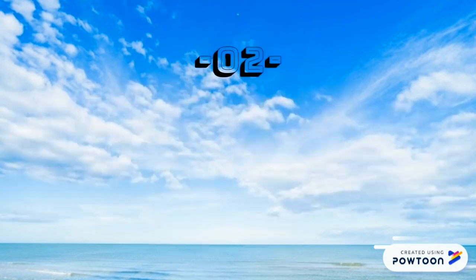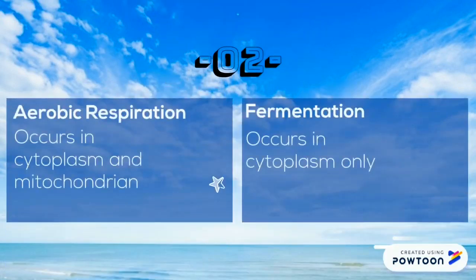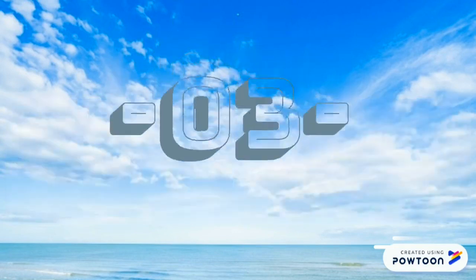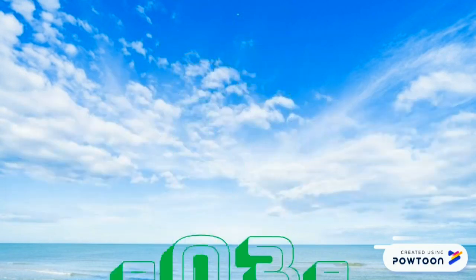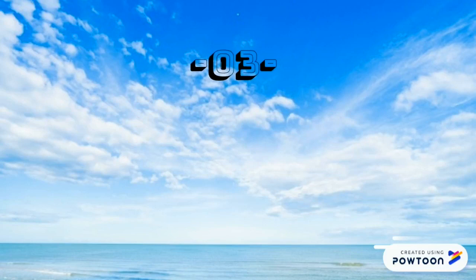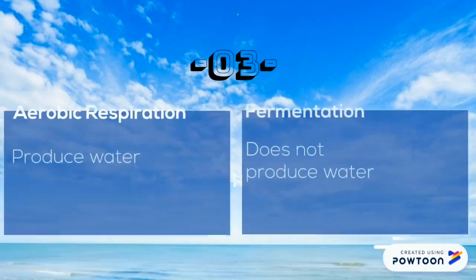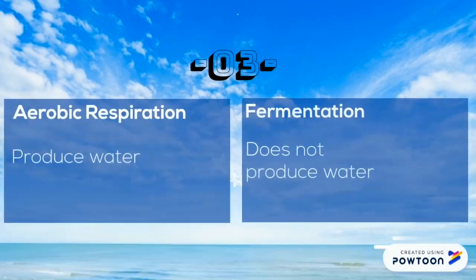The second difference: aerobic respiration occurs in both the cytoplasm and mitochondria, while fermentation occurs in the cytoplasm only. The third difference: aerobic respiration produces water, while fermentation does not produce water.